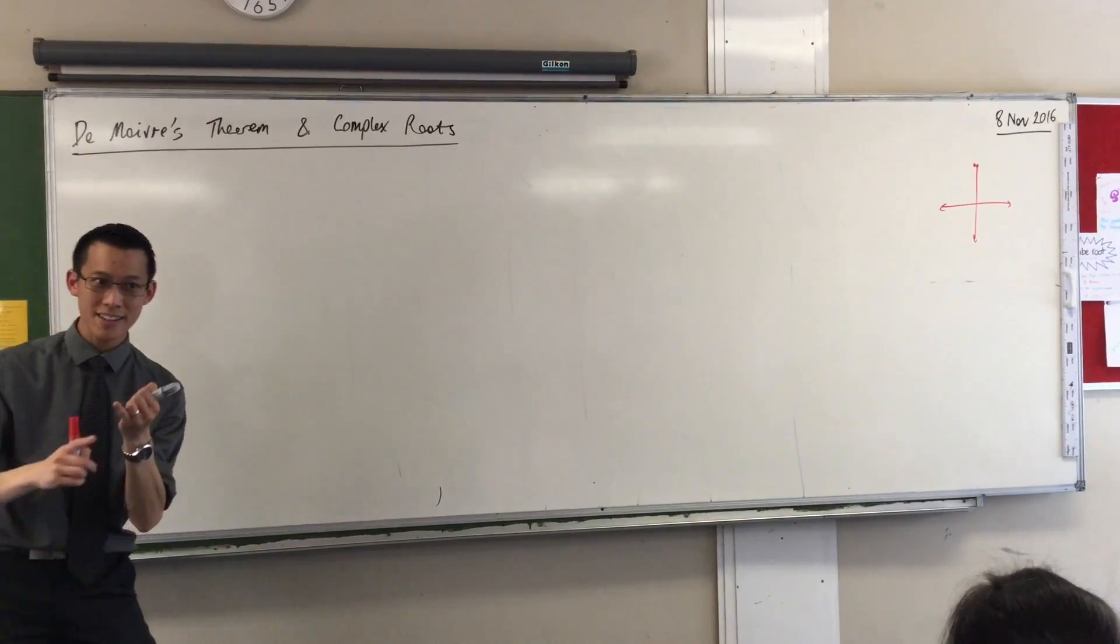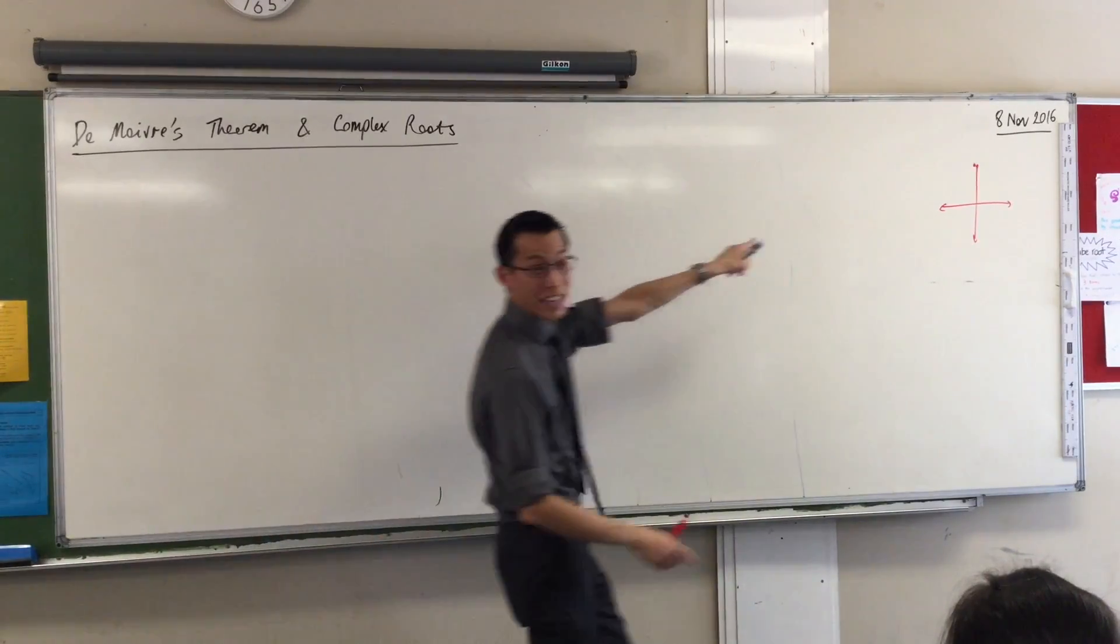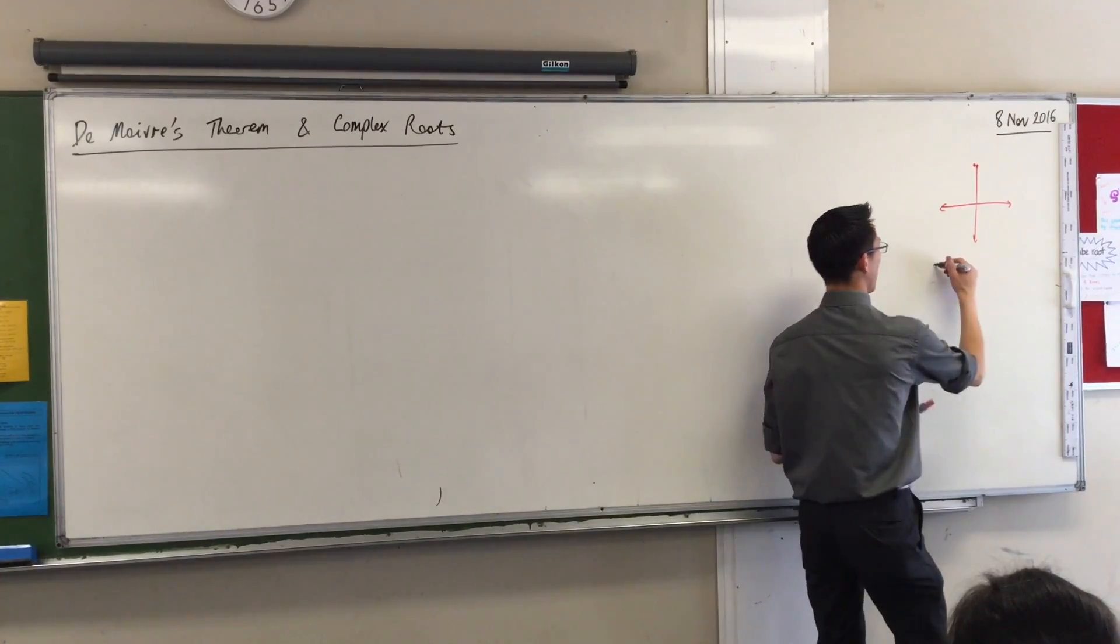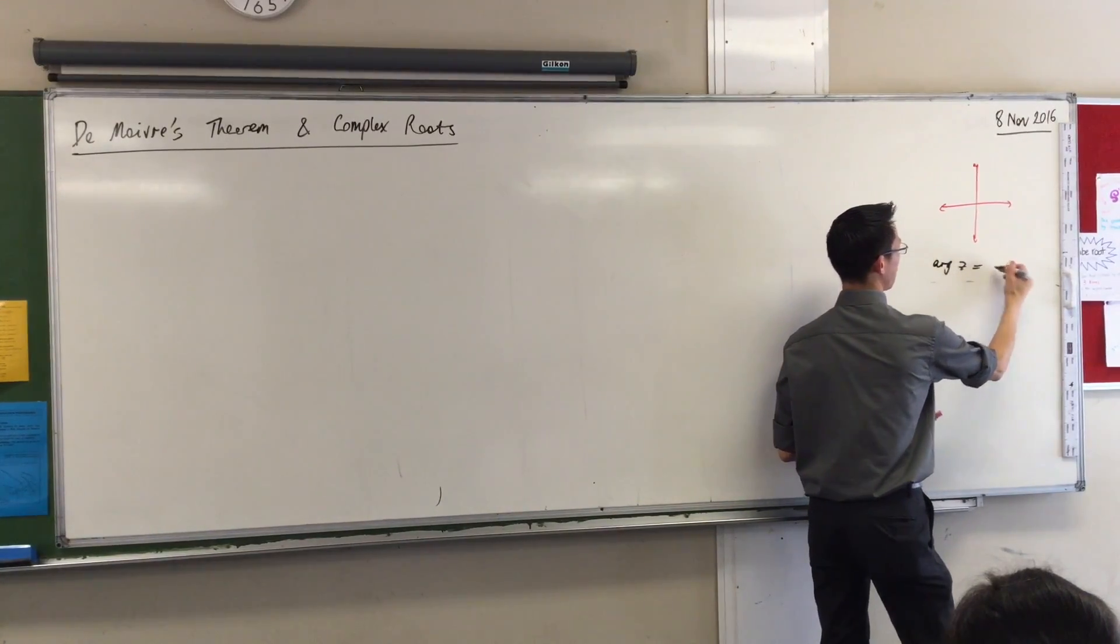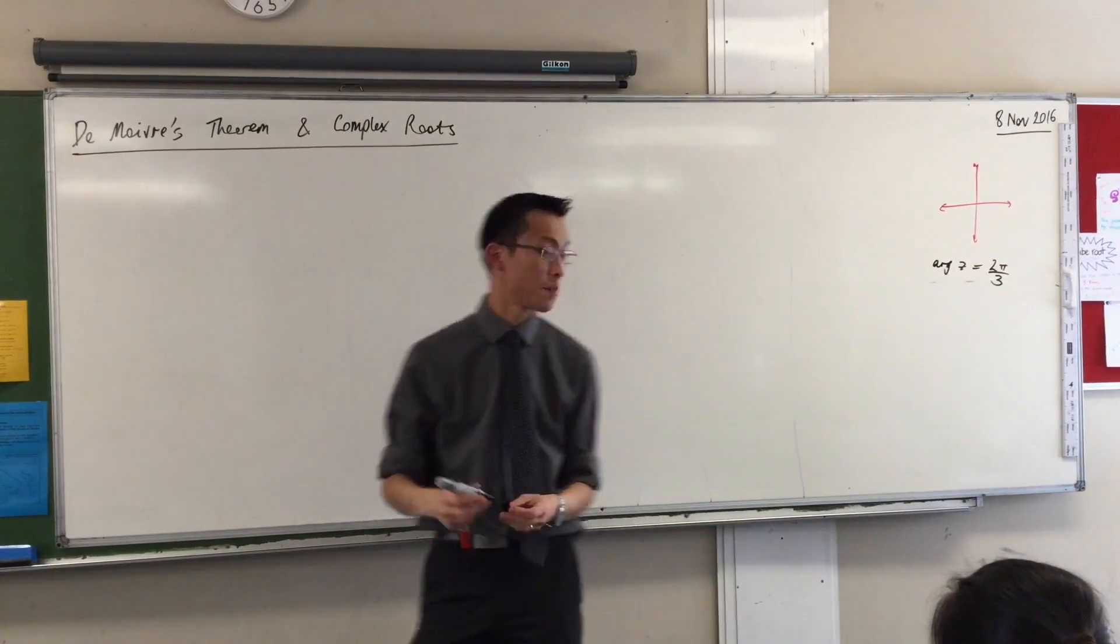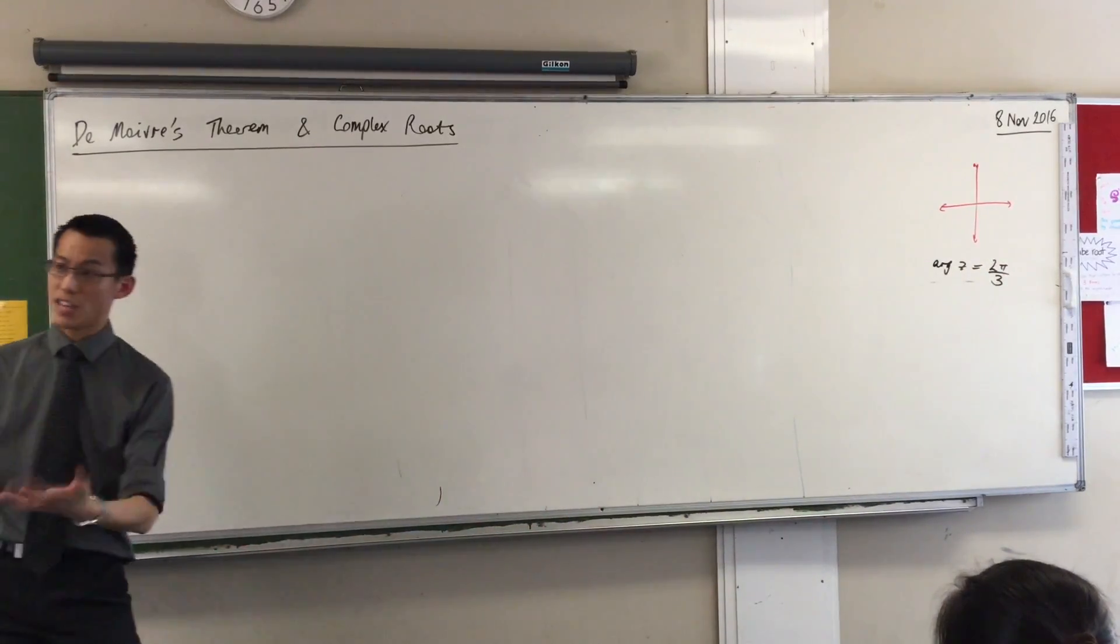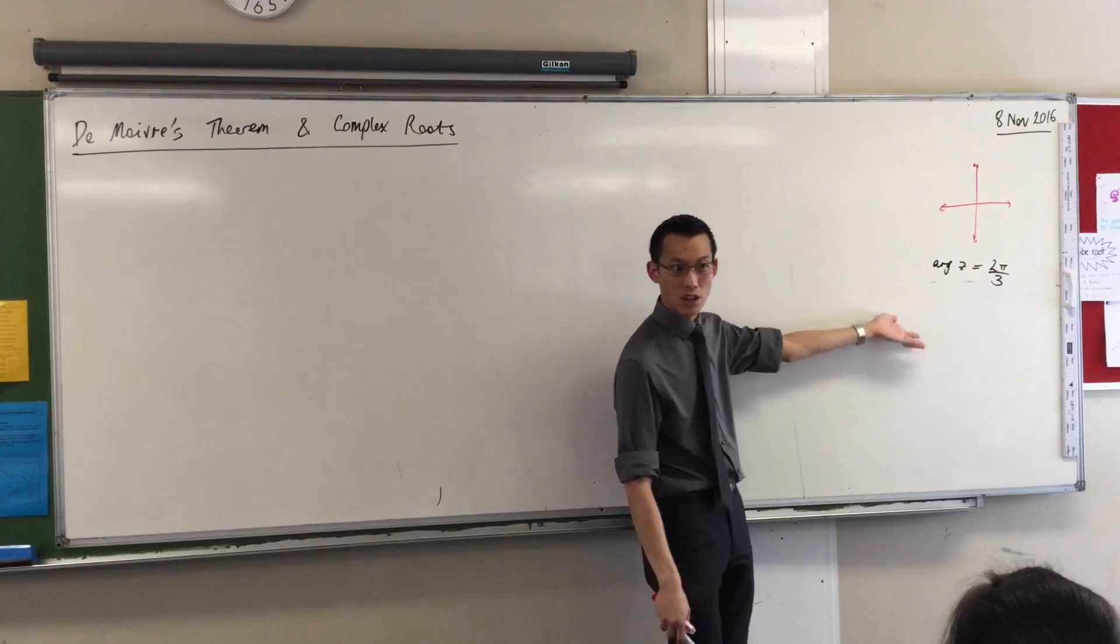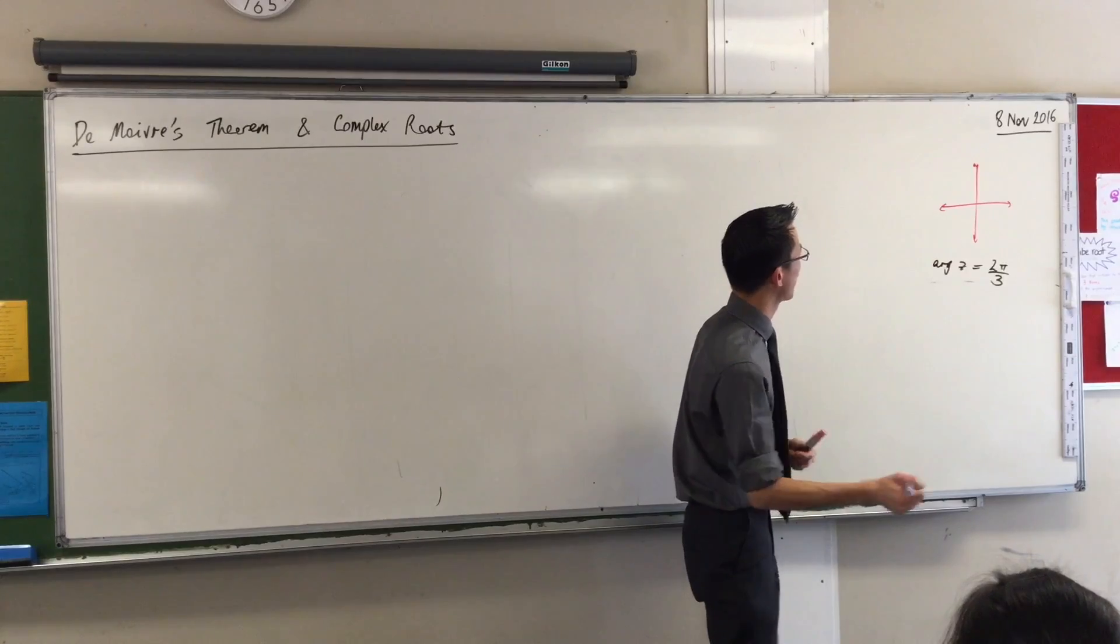We looked at graphing on the complex plane some kind of expression like say, oh I don't know, what was it we looked at? Something like this. We might have looked at that exact example, actually I can't even remember. So there's a set of points, there's a set of z's that satisfy this equation and you can draw them. What do these ones look like? What would you draw for this one?